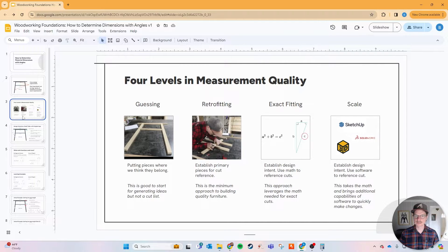Whenever I want to enhance my skills, I like to put it on a spectrum from what's the best to the beginner level. When I started out designing furniture, I was guessing, putting the pieces where I think they belong, which is great because it gives you an idea, but it's not something you want to take to the cut list. The next level is actually picking a piece out of that furniture as your primary reference. I'd say this is the minimum approach to building quality furniture because you have exact measurements against that piece, but not to the design that you intend.